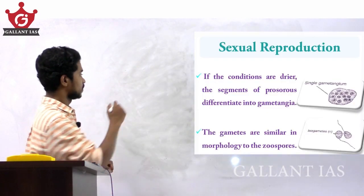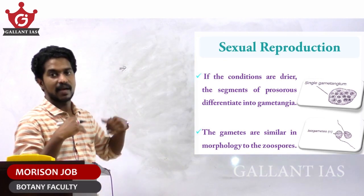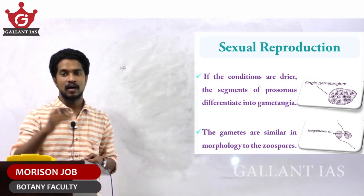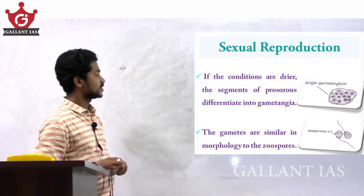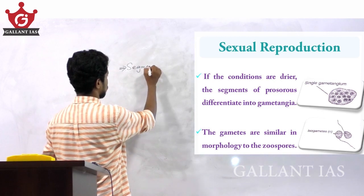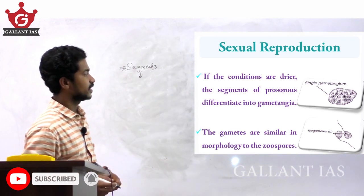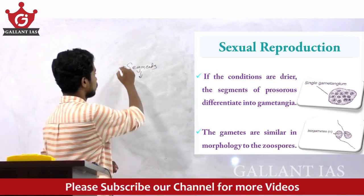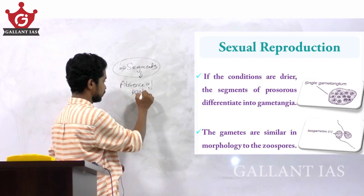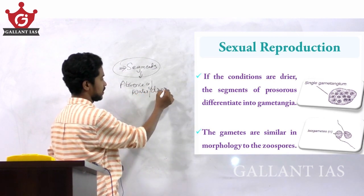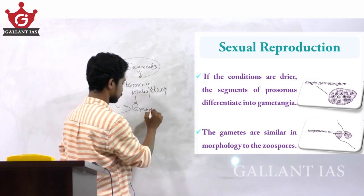Sexual reproduction of Synchytrium. If there is plenty of water, it behaves as zoospores, and if conditions are drier or there is an absence of water, the segments of prosorus differentiate into gametangia.